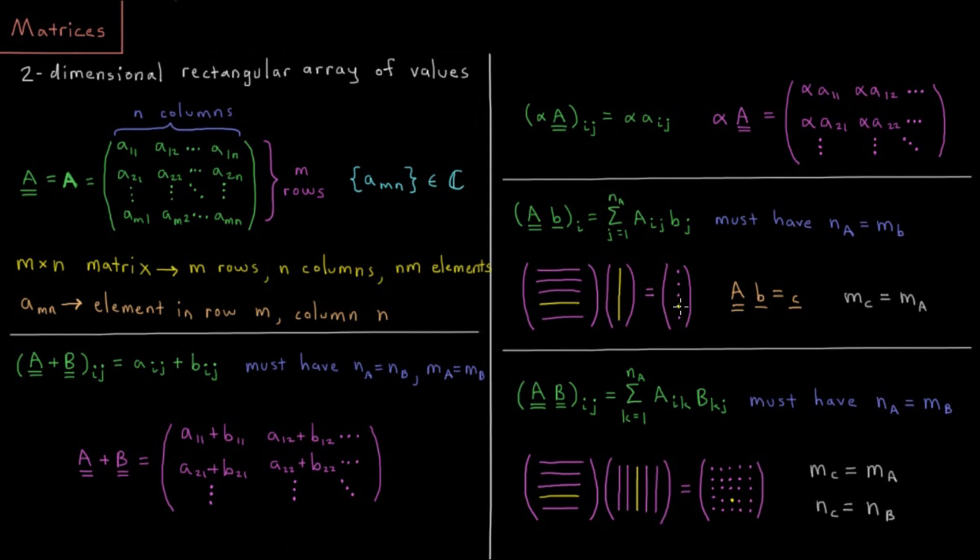For each element in the final vector C, we multiply the element A sub i, j times the element B sub j, and then keep summing as you go down the row of the matrix and the column of the vector.